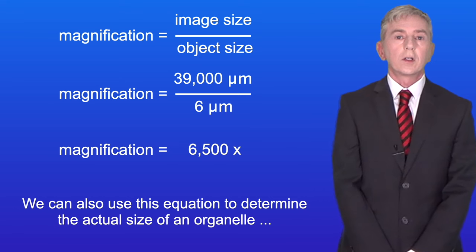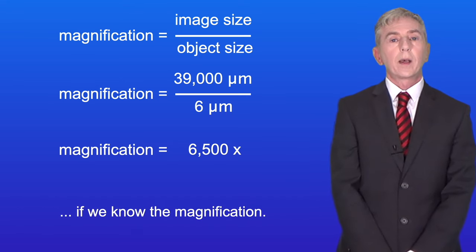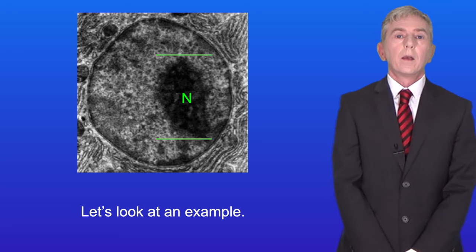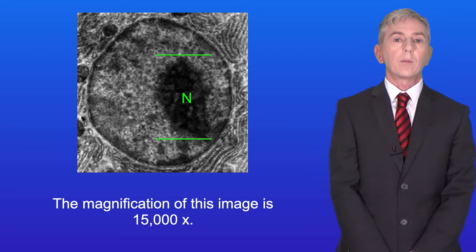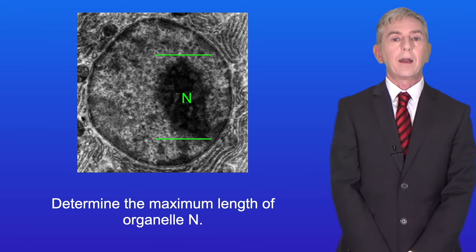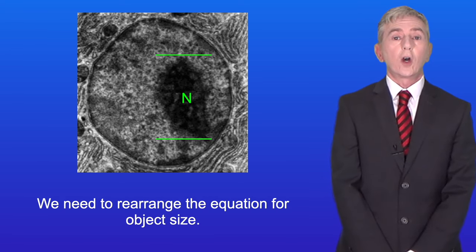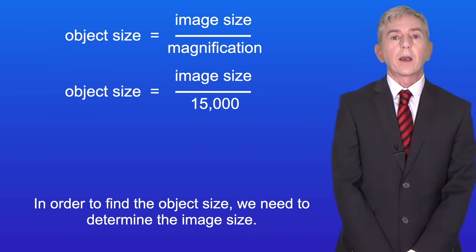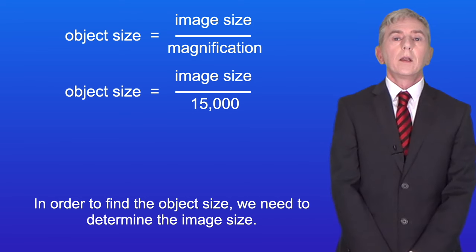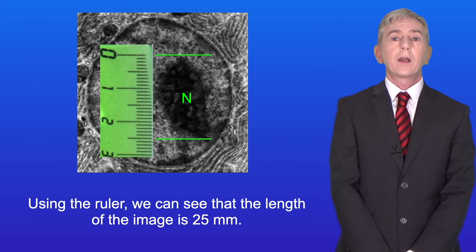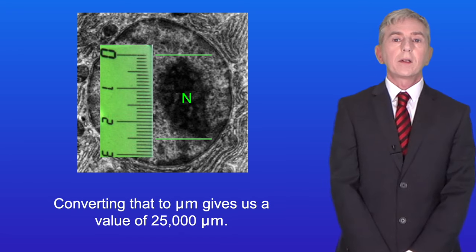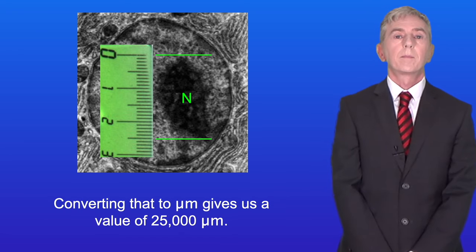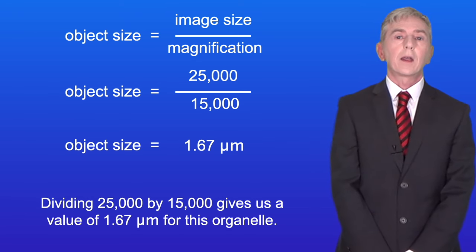We can also use this equation to determine the actual size of an organelle if we know the magnification. The magnification of this image is 15,000 times — determine the maximum length of organelle N. We rearrange the equation to solve for object size: object size equals image size divided by magnification. Using the ruler, the length of the image is 25 millimeters, which converts to 25,000 micrometers. Dividing 25,000 by 15,000 gives us 1.67 micrometers.